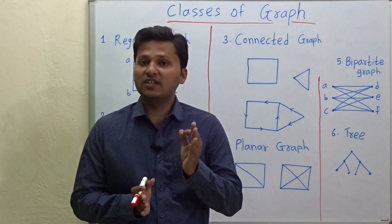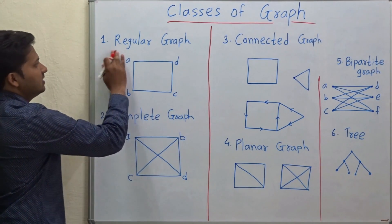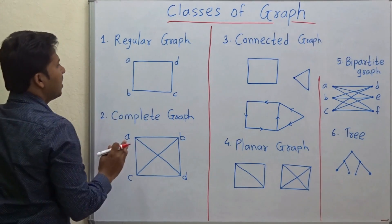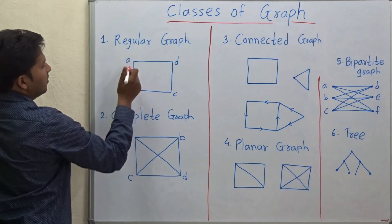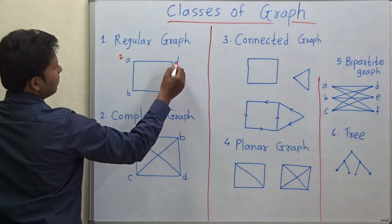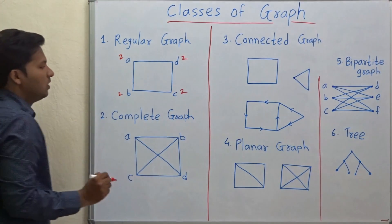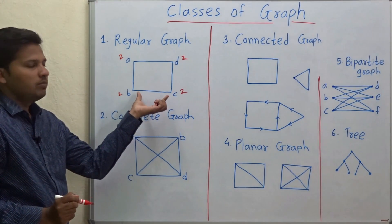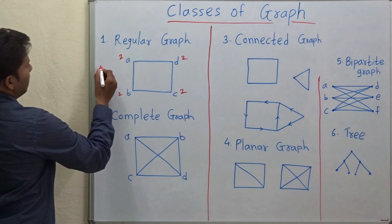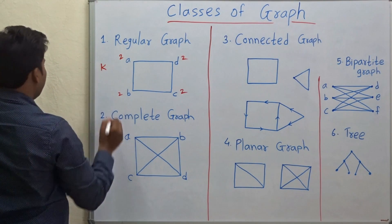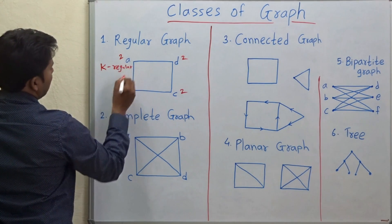We are going to see different classes of graph. The first class is regular graph. In this graph every vertex has the same degree. Vertex A has degree 2, vertex D has degree 2, vertex B has degree 2, and vertex C has degree 2. This is a regular graph because every vertex has the same degree. If every vertex has degree k, then that graph is called a k-regular graph.